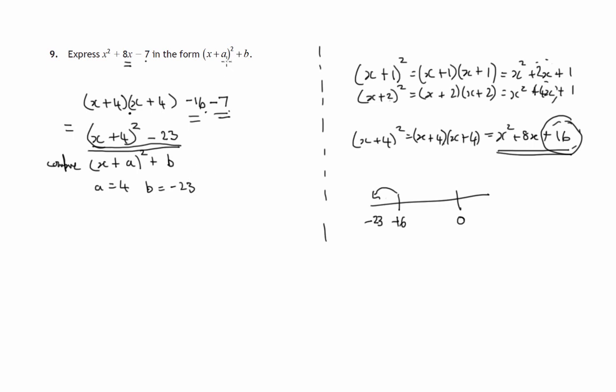Remember if you're asked to give the values of a and b, which we're not in this case, you would give the values a is 4, b is negative 23. So that part is not particularly required in this question for full marks.